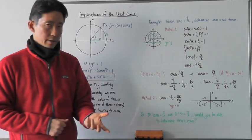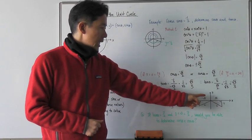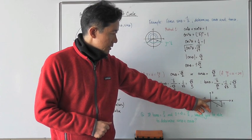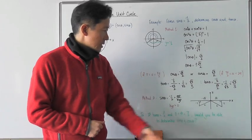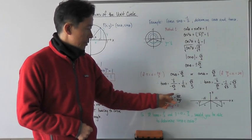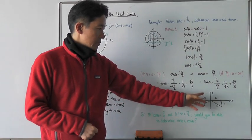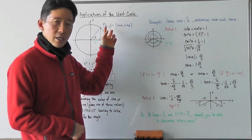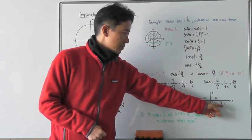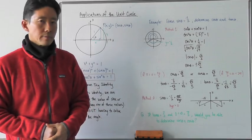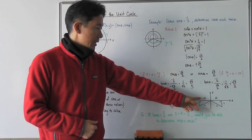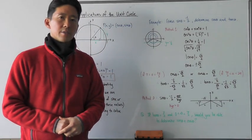If I draw a right triangle that fits this description in the x-y coordinate plane, with one vertex at the origin, I associate negative one with the opposite side. Since sine theta is associated with the y value, the y value is going to be negative one. The hypotenuse, which must be a positive value, is two.